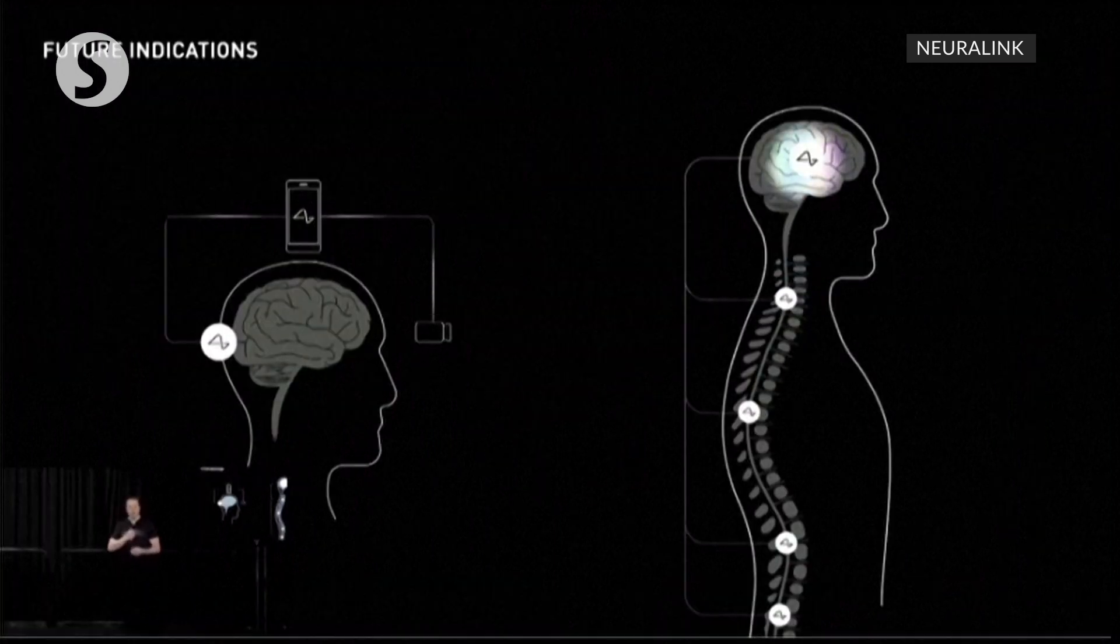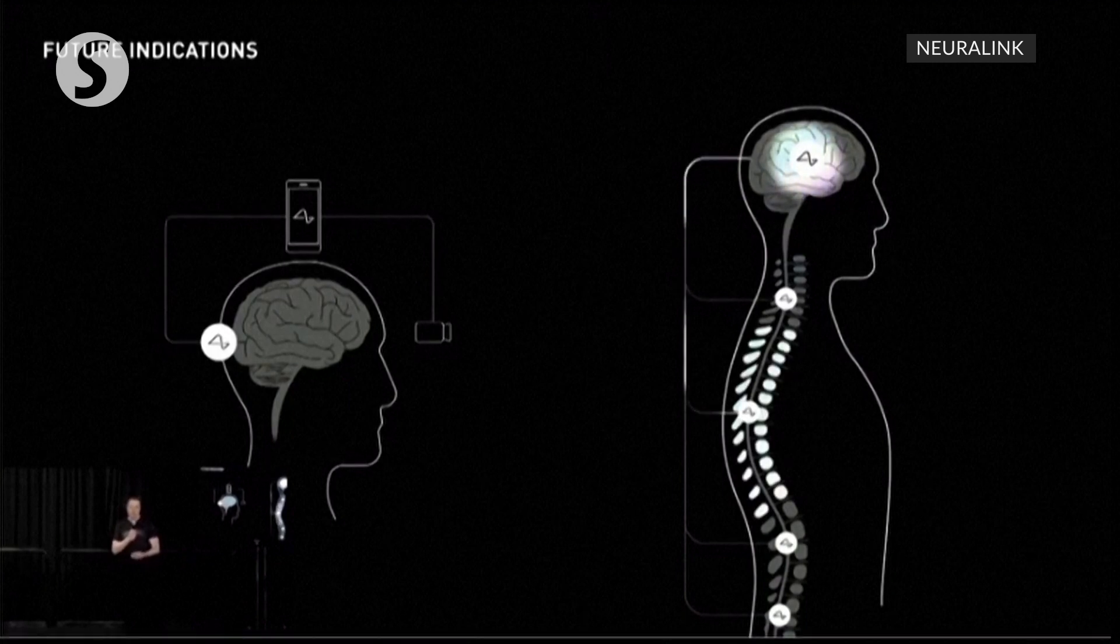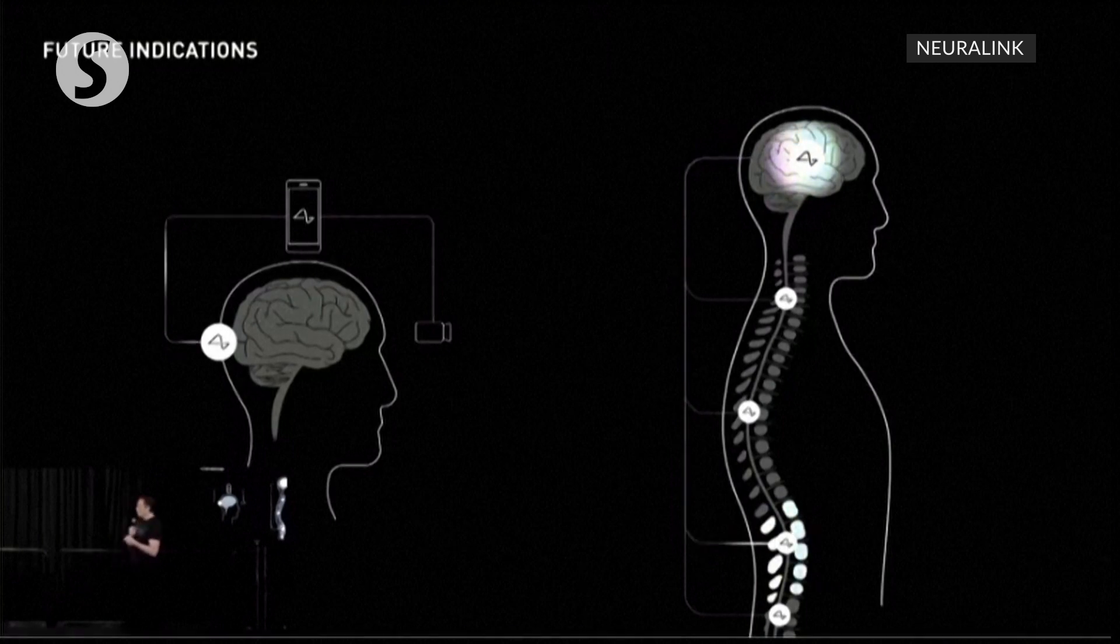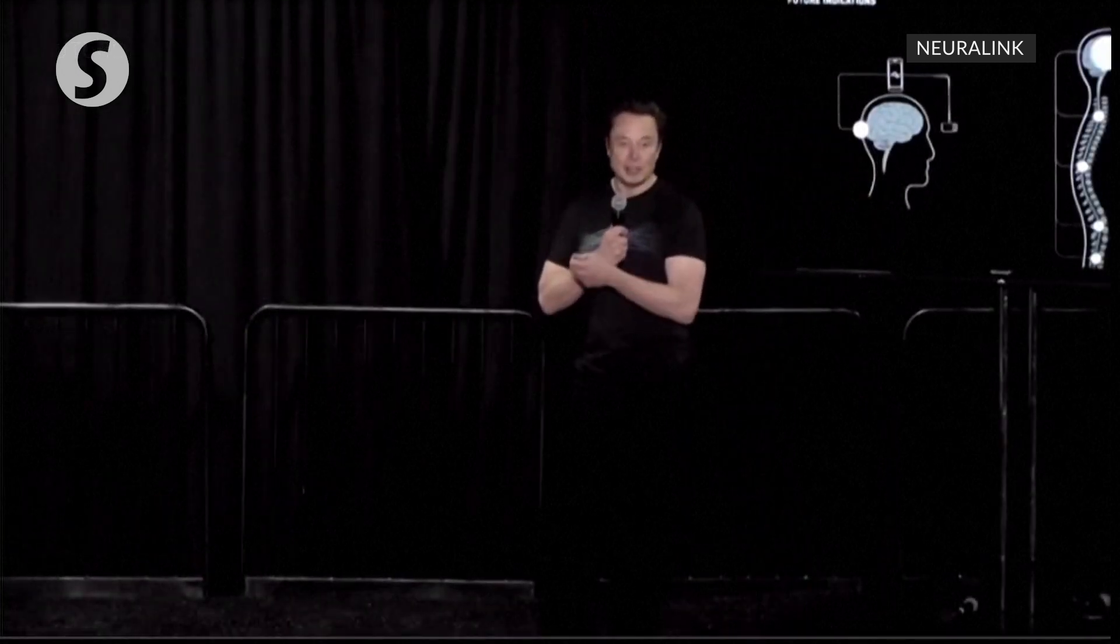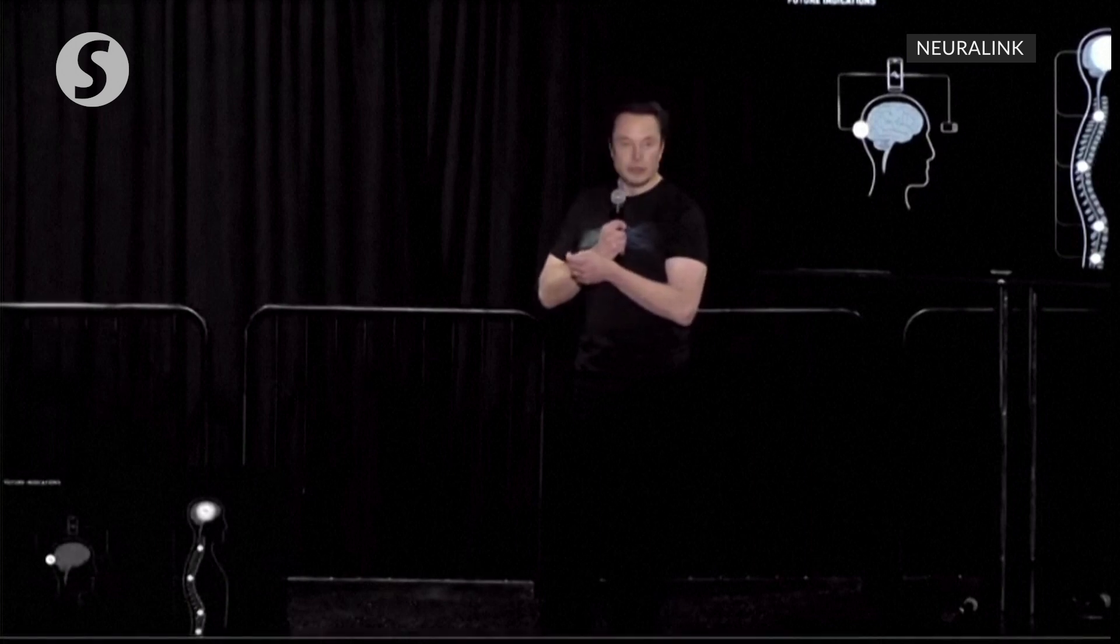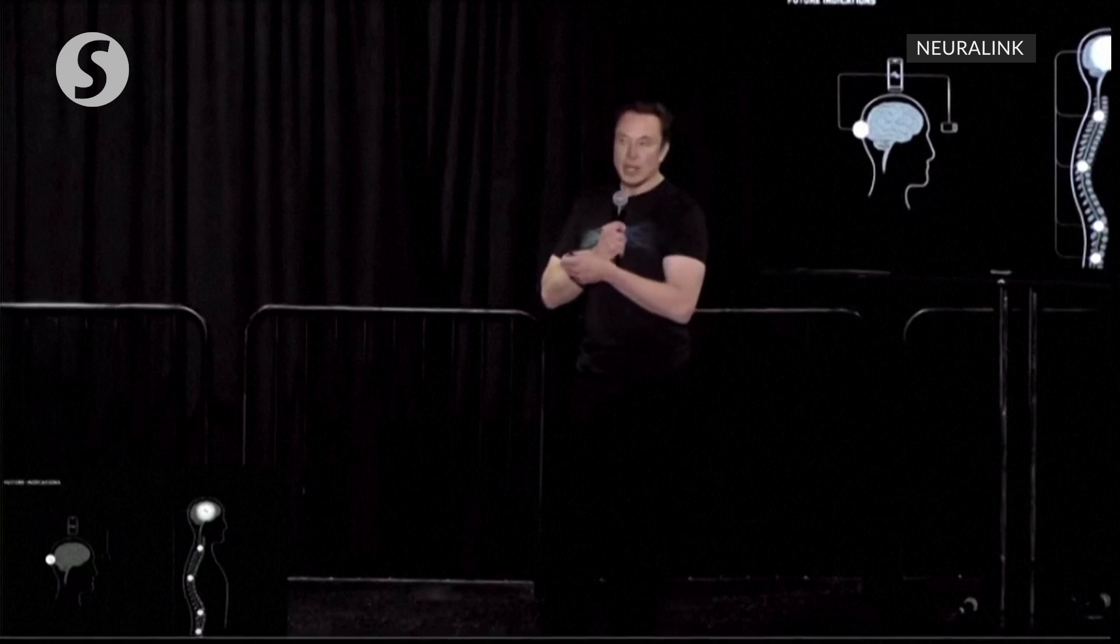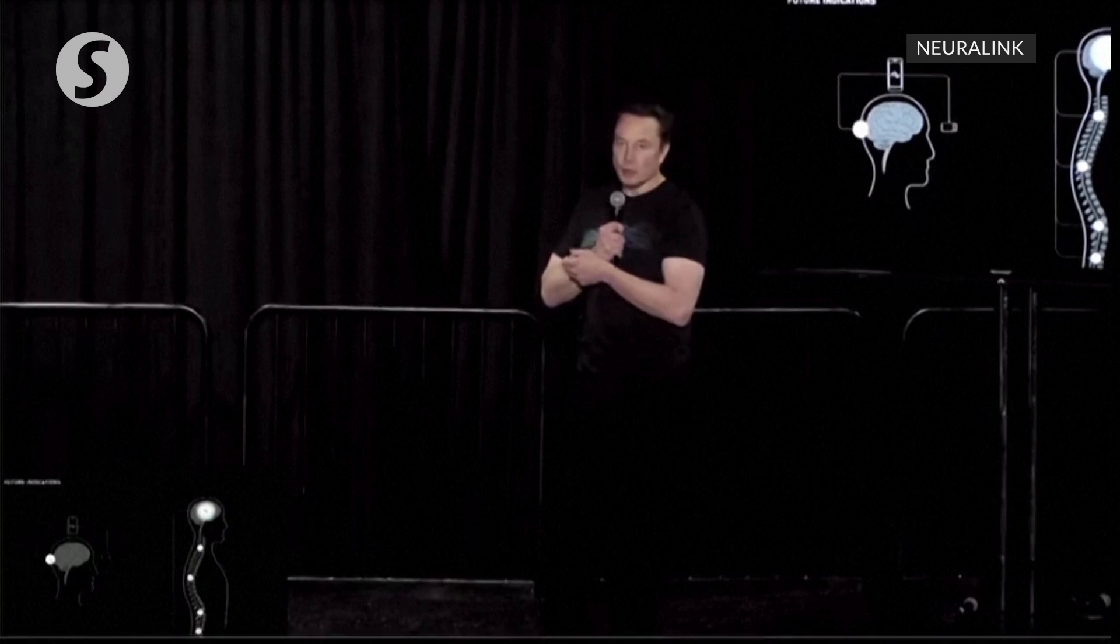The first two applications we're going to aim for in humans are restoring vision, and I think this is notable in that even if someone has never had vision ever, like they were born blind, we believe we can still restore vision because the visual part of the cortex is still there. So even if they've never seen before, we're confident that they could see.